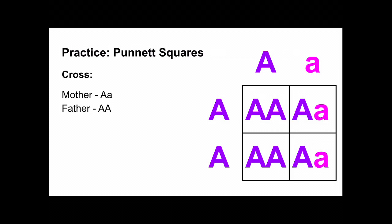And now we have a completed Punnett square. We have mom's alleles on the top, dad's alleles on the side, four possible genotypes for the offspring in the center of the square.